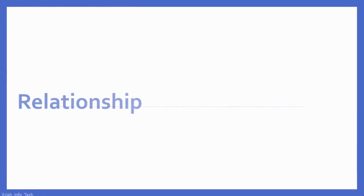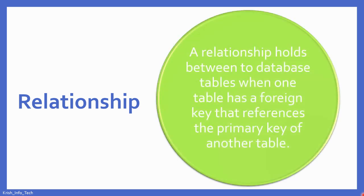Before doing all these, we are going to learn about relationships. As MS Access is following the relational data model, we are going to have so many tables in the same database. We are going to connect all these tables, and that will make a relationship. A relationship holds between database tables when one table has a foreign key that references the primary key of another table. The relationship is based on a common field, which is called the foreign key and primary key.